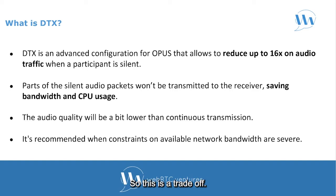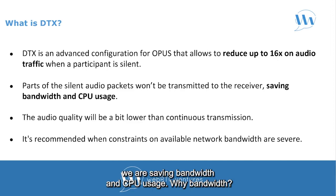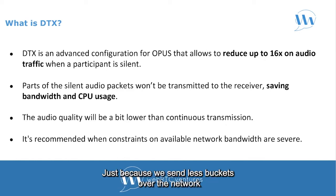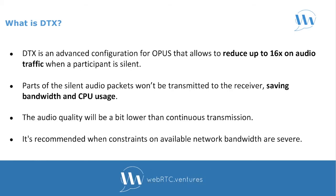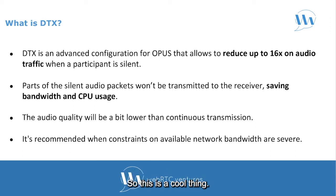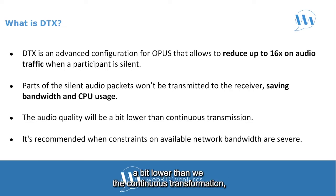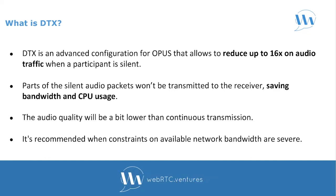So this is a trade-off. The pros are that we are saving bandwidth and CPU usage. Why bandwidth? Because we send fewer packets over the network. We are also saving CPU usage because the receiver — the other peer — will be decoding fewer audio packets. The con is that the audio quality will be a bit lower than with continuous transmission, which is the default behavior when DTX is disabled, although the difference is not really noticeable.